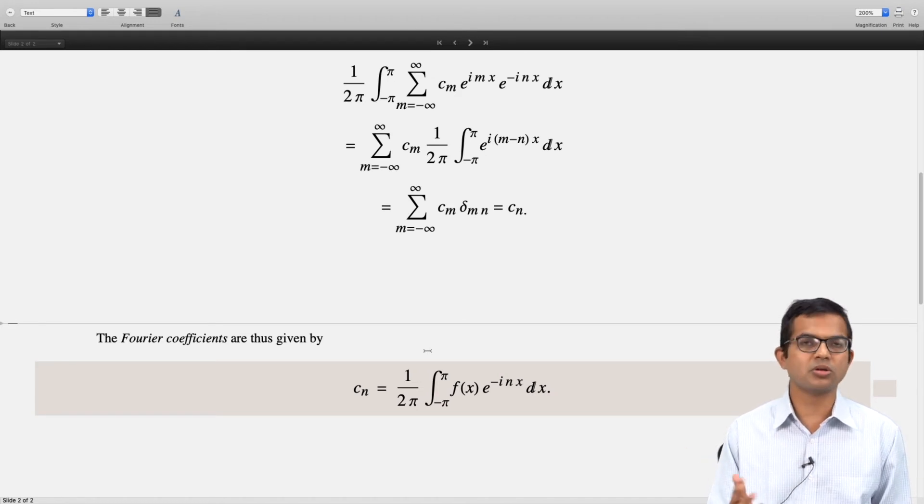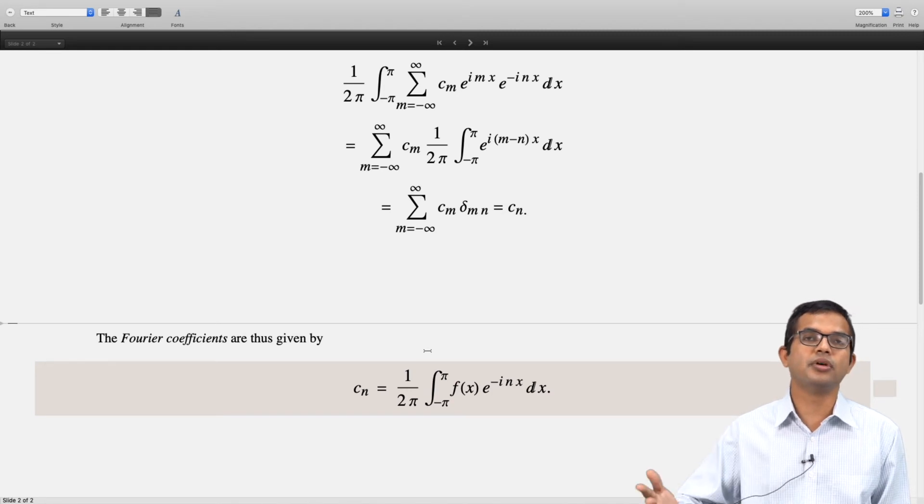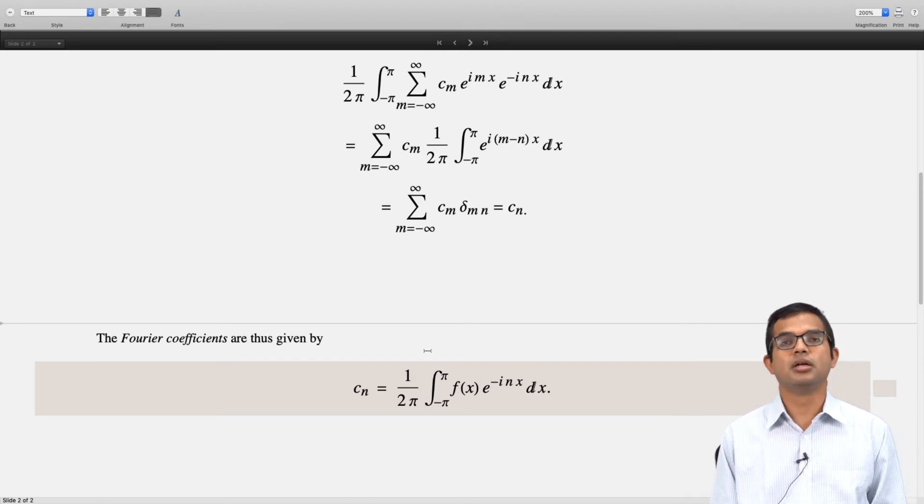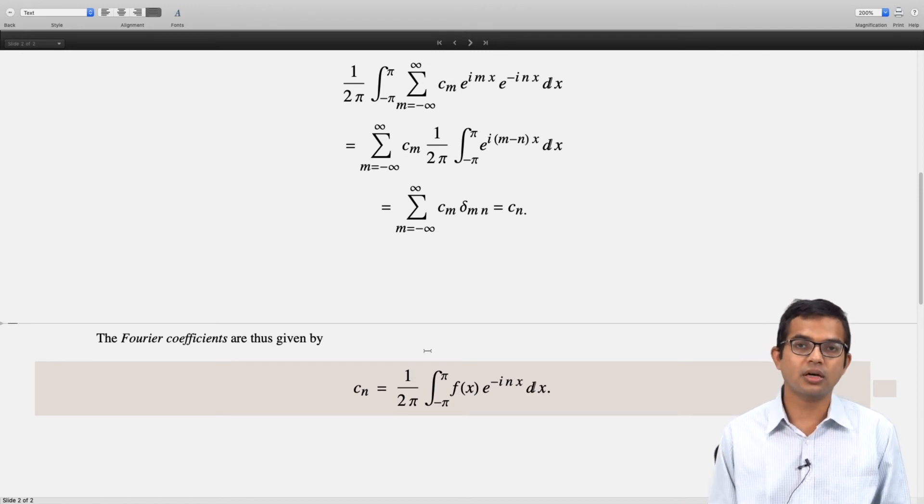Nothing spectacularly new has happened here. It is just completely equivalent to the sine and cosine approach. We could have also started with the sine-cosine series and replaced sine and cosine with exponentials: sin(x) can be written as (e^(ix) - e^(-ix))/(2i) and cos(x) as (e^(ix) + e^(-ix))/2.